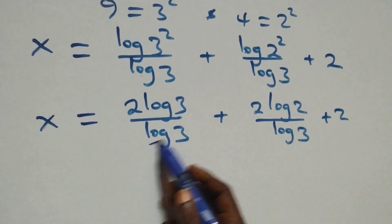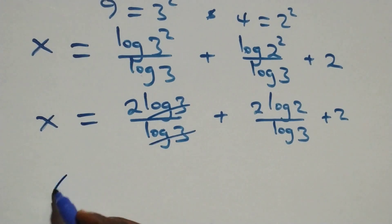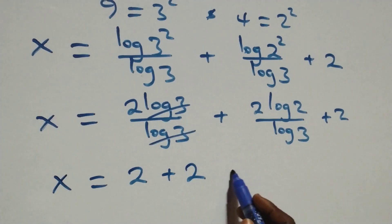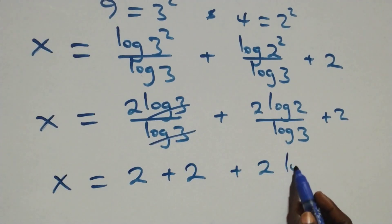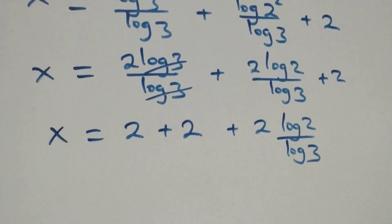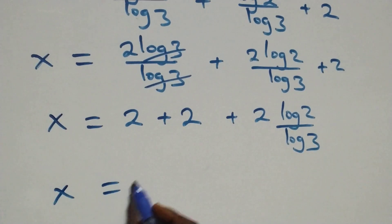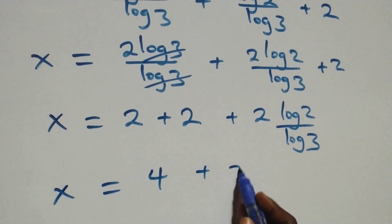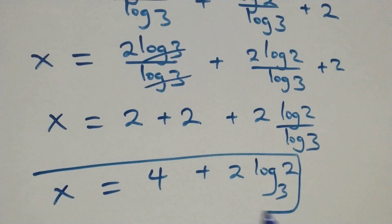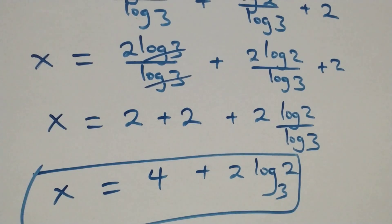So x equals 2, plus we separate this as 2 times log 2 over log 3. This becomes x equals 2 plus 2, that is 4, plus 2 log₂3 — applying change of base. The value of x in this problem is 4 plus 2 log base 3 of 2.